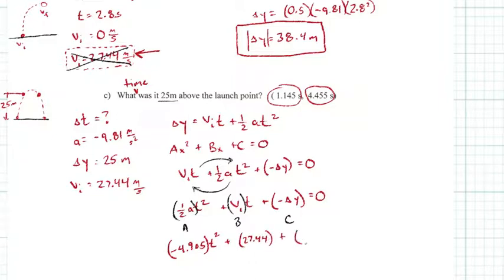Plus our negative displacement, so our displacement is 25, so that's going to be negative 25 meters, all set equal to zero. When we use our quadratic formula, whether it's in the calculator or the long hand version, these are the values we're going to use for a, for b, and for c when we punch them in.